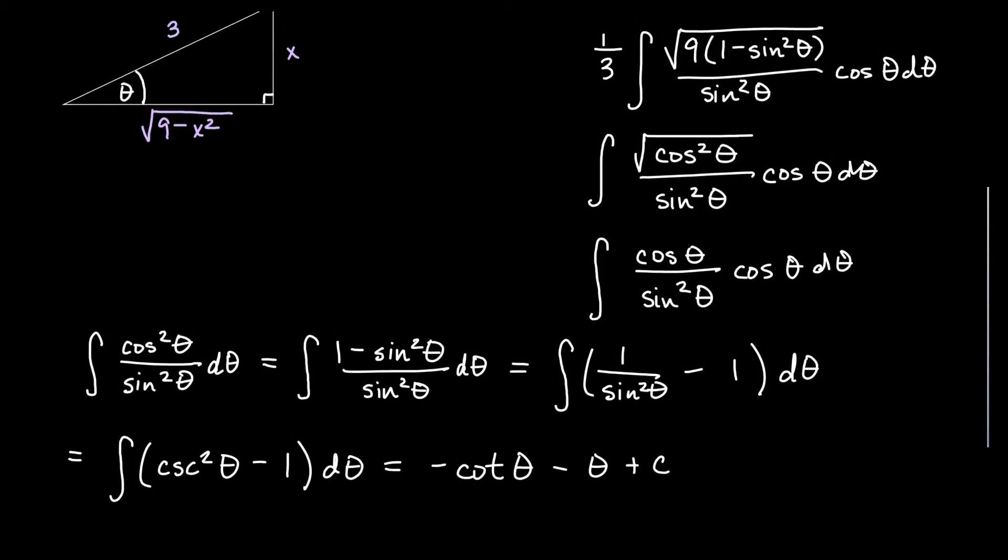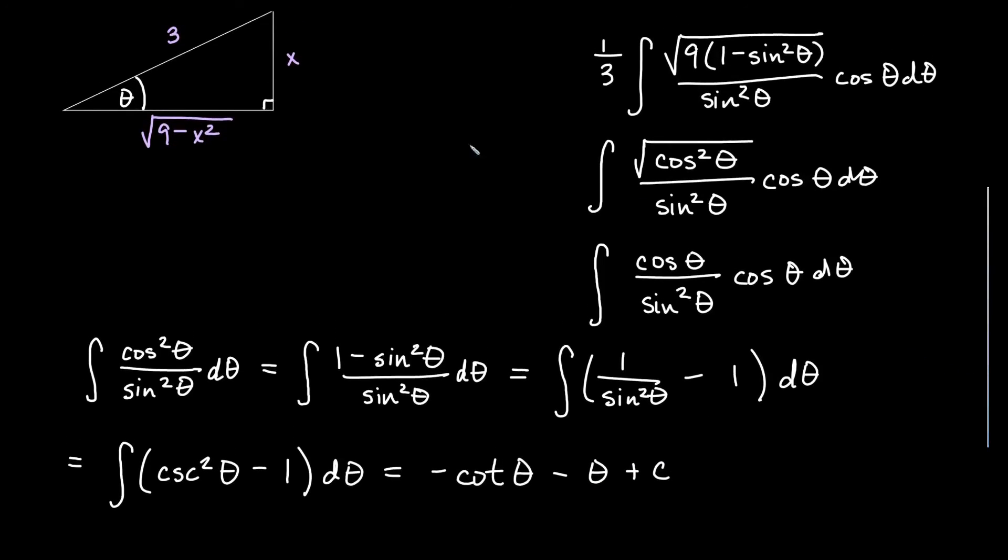So now let's look back at our triangle and notice what we might need from this. So first of all, we'll need cotangent of theta. So think about cotangent of theta is going to be the adjacent over the opposite. It's the reciprocal of tangent, which is opposite over adjacent. So in this case, we will get the square root of 9 minus x squared is our adjacent, and our opposite is going to be x. So that's what we will replace cotangent with minus theta.